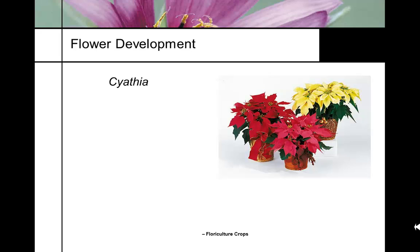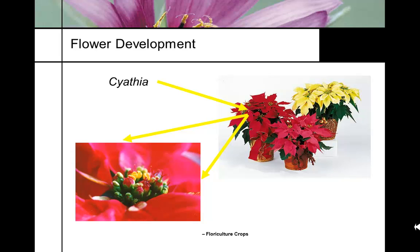In a poinsettia, where is the flower? The red part is actually a bract — a modified leaf. The actual flowers are the little cluster in the middle called the cyathia. The big gaudy red bracts are modified leaves; the true flower in euphorbia is just that small structure in the middle.